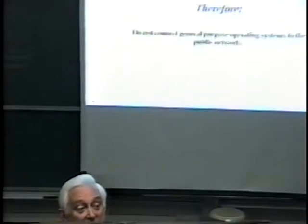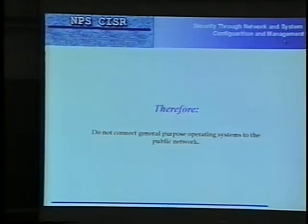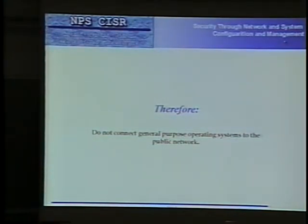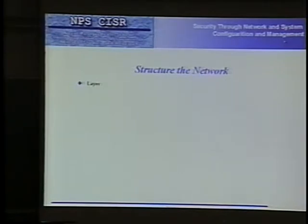Therefore, we should not be connecting general purpose operating systems to the public network. Nice people simply don't do that. And yet most everything connected to the Internet is based on one of those two systems. If you started from scratch, you would never do it that way. So there are tactics available to us. The first I call structuring the network — building the network in layers. That is, defense in depth. We've got to structure the network so that we have at least four layers.